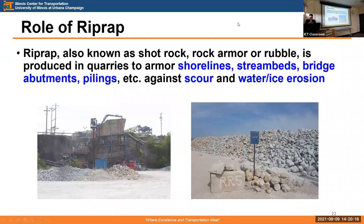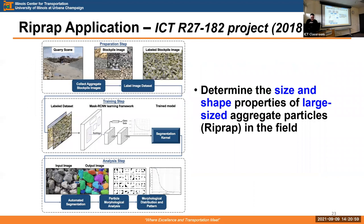A general introduction to riprap: riprap, also known as shot rock, rock armor, or rubble, is produced in quarries to armor shorelines, stream beds, bridge abutments, and peonies to scour as water-induced erosion. On the left is the production process at a quarry, and on the right is a stockpile separated by size range — R5 is medium size, R3 is small, and R7 is a large size riprap.